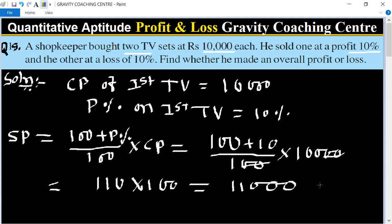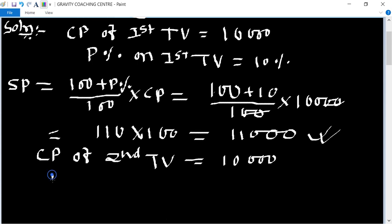So this is the SP for first TV. And CP of second TV equals its price is rupees 10,000. Loss of 10 percent on second TV, so loss percent on second TV equals.